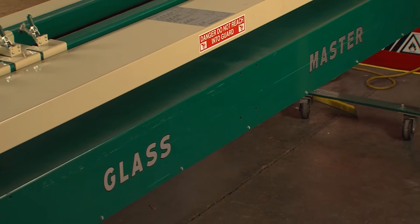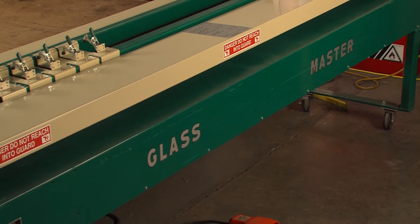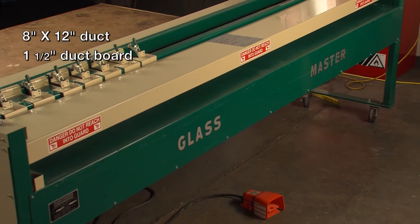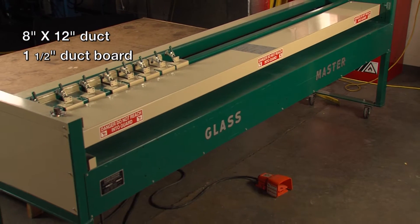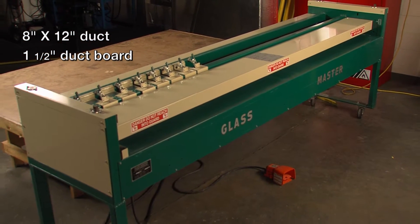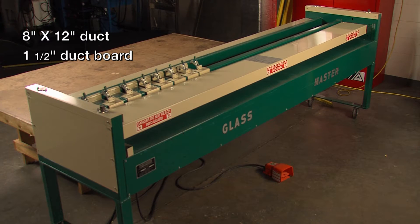Using a grooving machine saves time and makes fabrication easier and more accurate. We will start by showing you how to groove an 8 by 12 inch duct with one and a half inch duct board using the Glass Master E222 grooving machine.